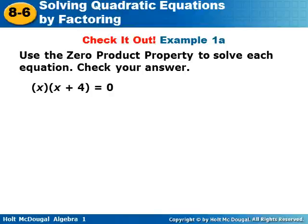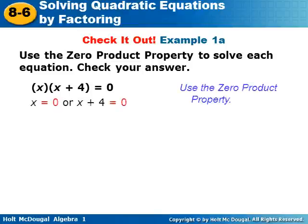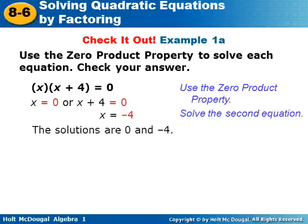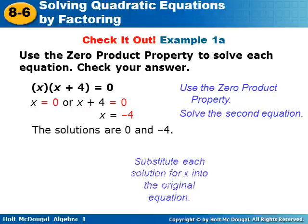Use the zero product property to solve: x times (x plus four) equals zero. Try this one yourself, then check back for the answer. Using the zero product property, either x equals zero or x plus four equals zero. Subtracting four from both sides gives x equals negative four, so the solutions are zero or negative four.